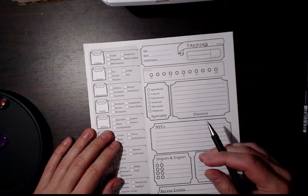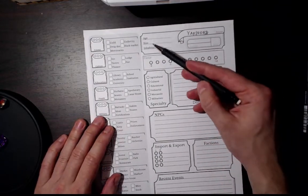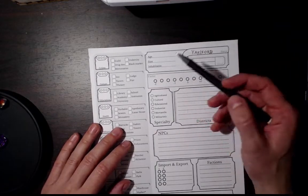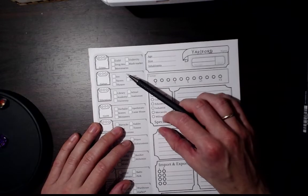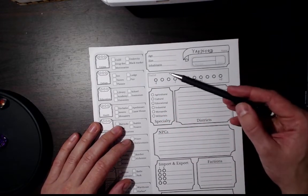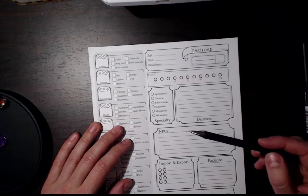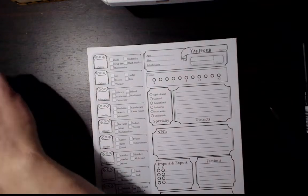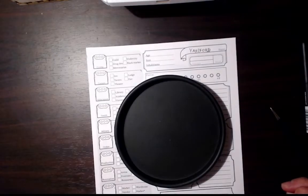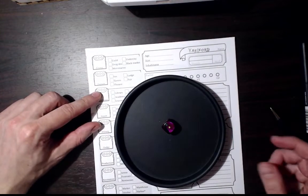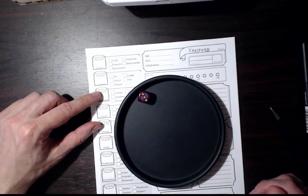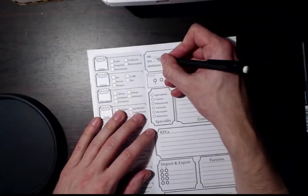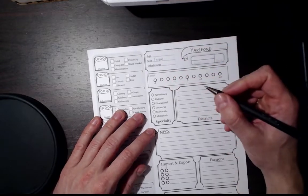The first thing you'll do when making a town is roll the size of the town. I kind of want to show you how to do this, so I'll take a d6 and roll it. Three - we will be making a town today, so we'll be writing town here for our town size.